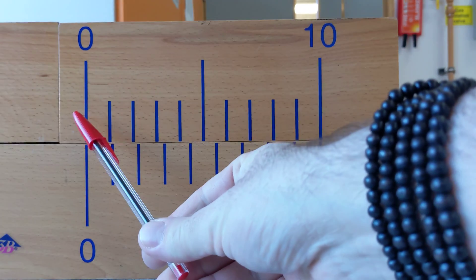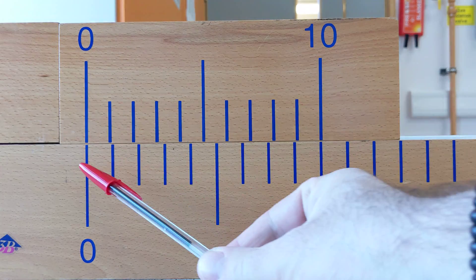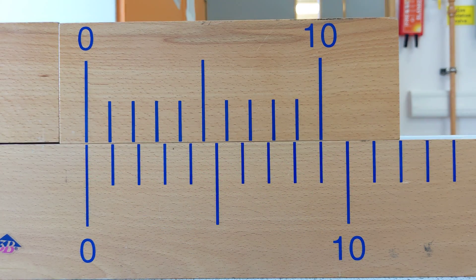You will also notice that ten spaces along the vernier scale lines up with just nine spaces along the main scale.